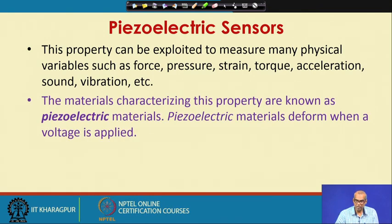The materials characterizing this property are known as piezoelectric materials. Piezoelectric materials deform when a voltage is applied — that means this property is invertible. A piezoelectric material when deformed will produce accumulation of surface charges. Similarly, when voltage is applied on the piezoelectric material, the piezoelectric material will be deformed. Later on we will briefly talk about how this property can be used to generate ultrasonic transmitters.